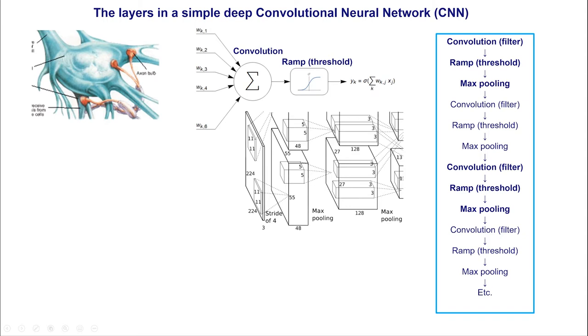So we see that we have a convolution layer, then the thresholds. We do some max pooling, that means you take the maximum value from a layer. And then again, the same convolution, ramp, max, convolution, ramp, max, etc. And modern of these networks, modern networks can have tens, 20, 30, 40, sometimes up to 150 of these layers.